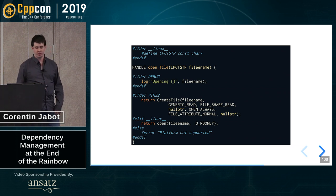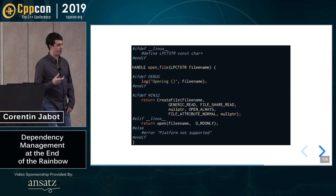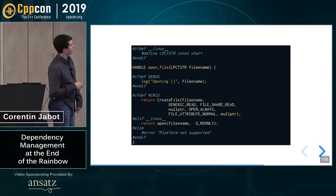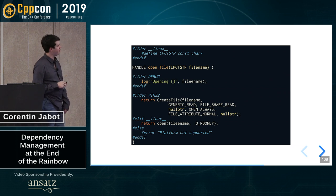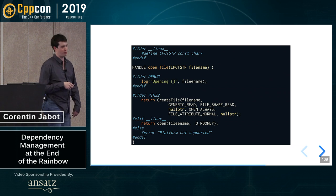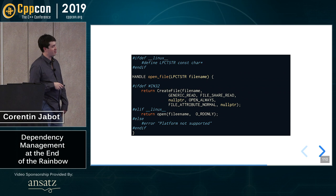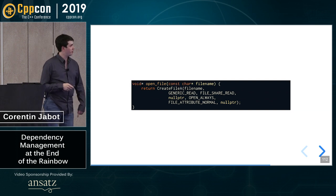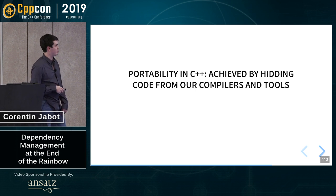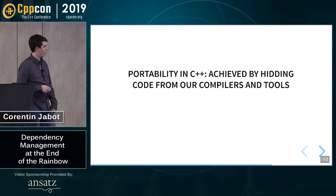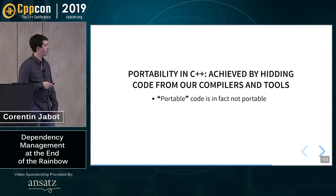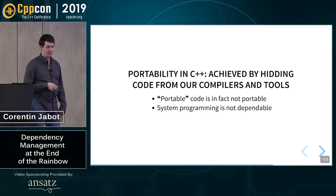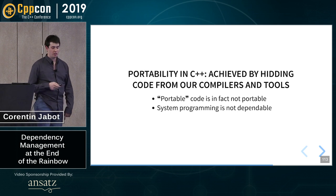Let me show a more complicated example. I'm trying to open a file in a cross-platform manner. On Windows I need to use the CreateFile function, and on Linux I use open with a file descriptor. There's a typo on that slide — I fixed it in some places but not others. Because I use ClangTidy, and ClangTidy cannot see the ifdef debug because I'm not on debug, and maybe cannot see the Linux code because I'm actually on Windows. There are even more macros in there. The way we do portability in C++ is by hiding code from compilers and tools. So portable code is not portable — it's just not there. Maybe we cannot actually depend on system programming.